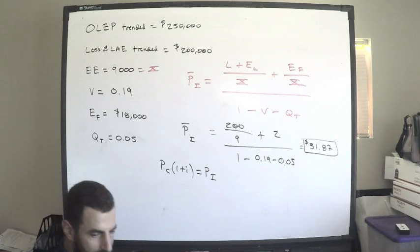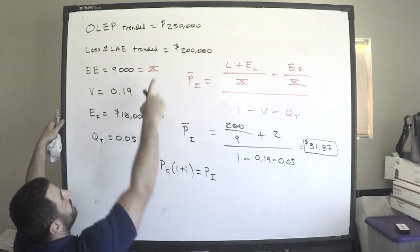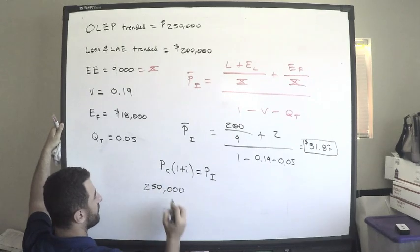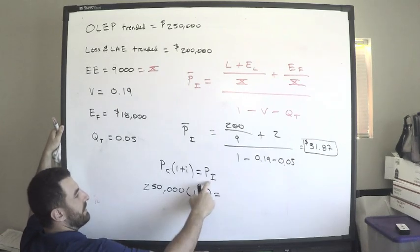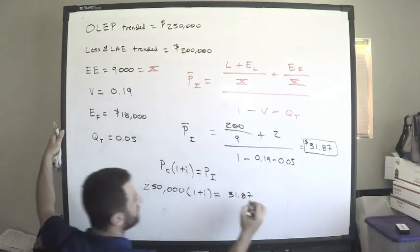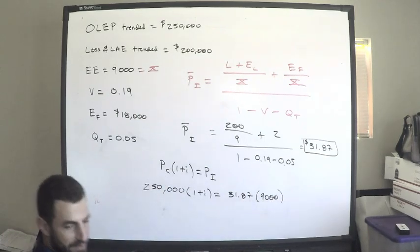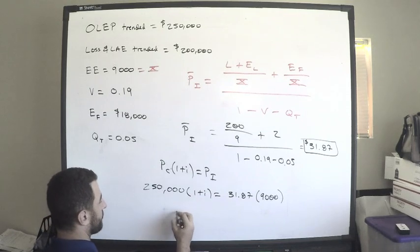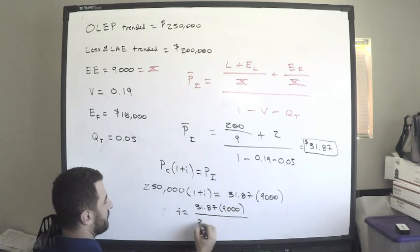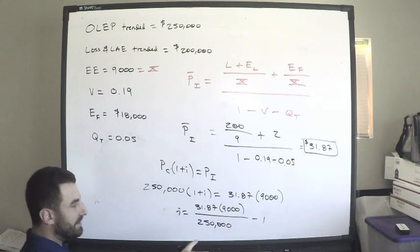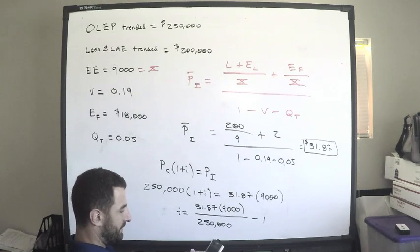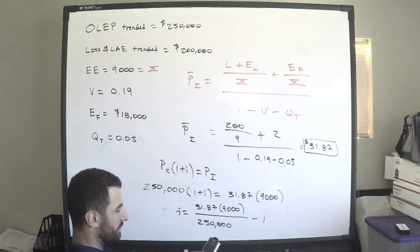The average indicated premium is 31.87. If I multiply by exposures, that will give me my indicated premium. So let's solve for i. i is equal to 31.87 times 9,000 divided by 250,000 minus 1. This should give me the same thing as before. Let's do that. I have my calculator, save the value there, times 9,000 divided by 250,000 minus 1. This is equal to 14.7%. These methods are equivalent.